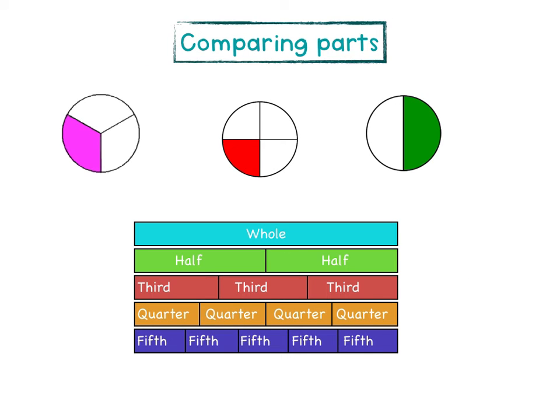Once learners have established equal parts and a whole, you can start doing a few simple fractions. Show them different fractions and ask them to describe what they notice about them, what they notice about the size, and how they have been cut and divided. Length models are one of the simplest ways to compare different fraction sizes.